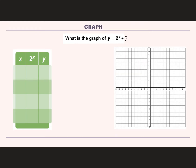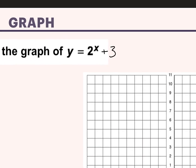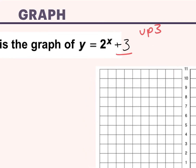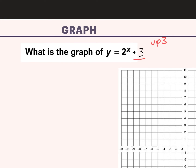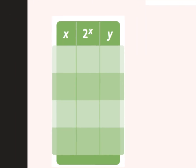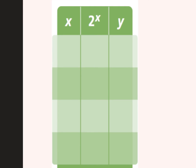All right, here our graph is 2 to the x plus 3. So I'm adding 3 on the outside. What type of transformation does this mean? It shifts up 3. When you add on the outside, it's up or down — if you add, you go up. So we're going to have that same graph shape from the last one, just shifted up 3. We're going to plug in the same numbers: negative 1, 0, 1, and 2.